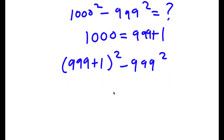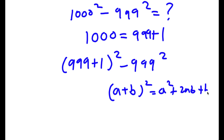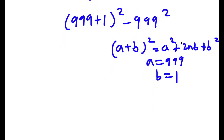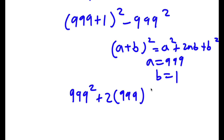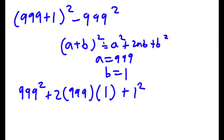Using the identity (a plus b) squared equals a squared plus 2ab plus b squared, where a is 999 and b is 1, I substitute to get 999 squared plus 2 times 999 times 1 plus 1 squared, and then minus 999 squared at the end.